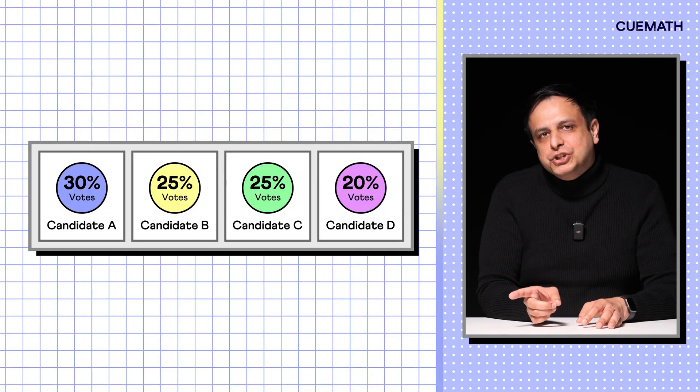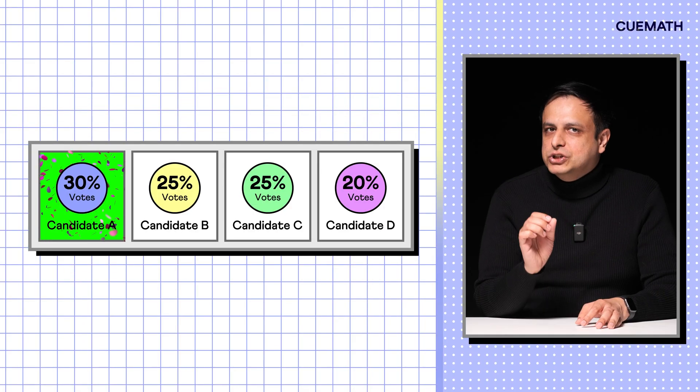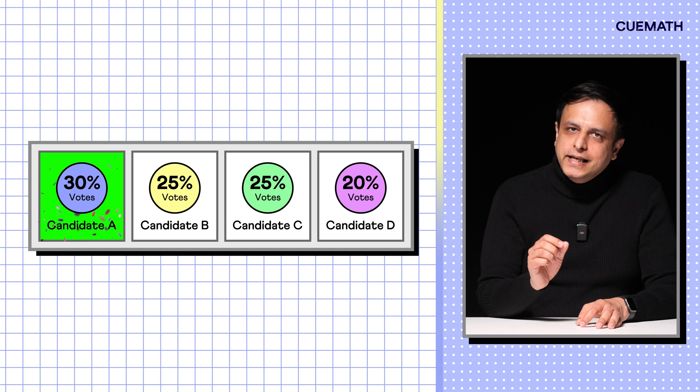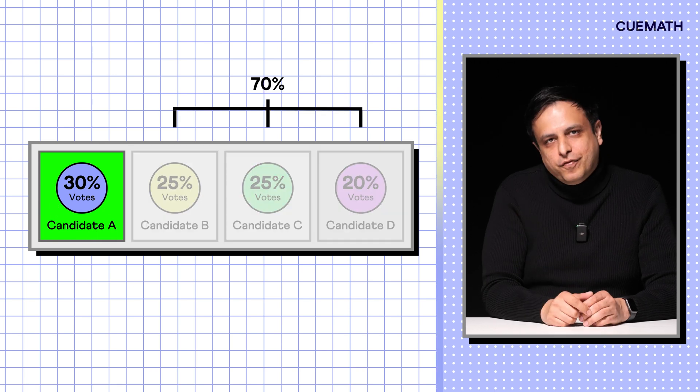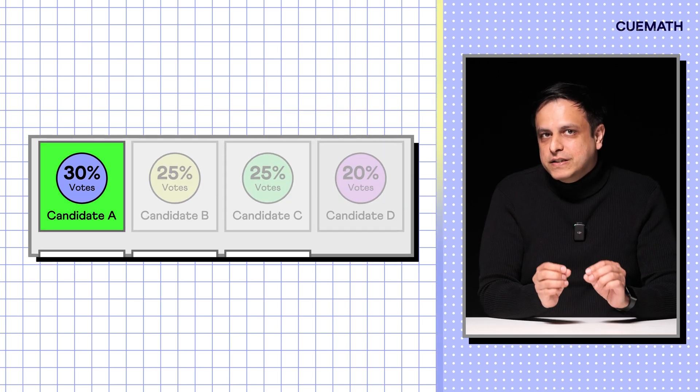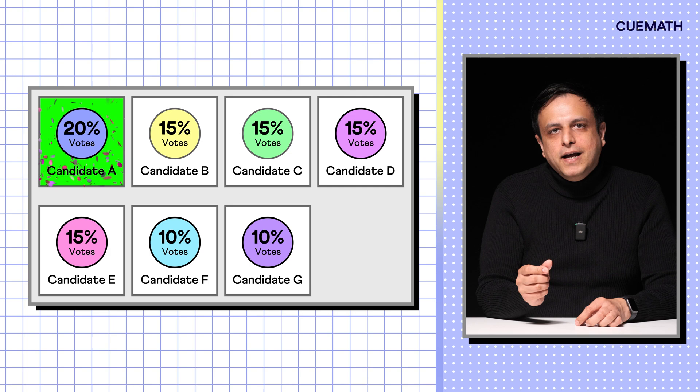For example, with this vote share, a candidate could win with just 30% of the votes even though 70% did not prefer them. Or in a race with seven candidates, the winner might have only 20%. This is a serious drawback and it happens quite often.